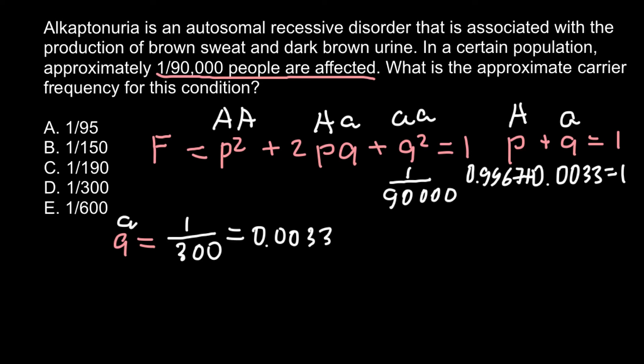So we now know the frequency of the dominant allele p, and this equals allele A, and recessive allele q, which equals small a. So now we can use this part of the formula in order to find how many carriers are in this population.